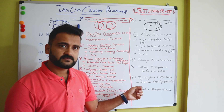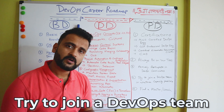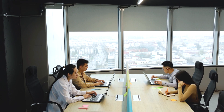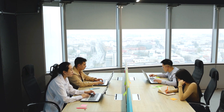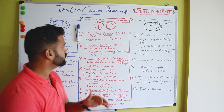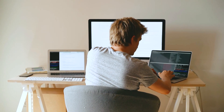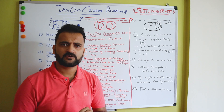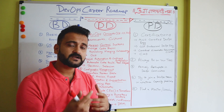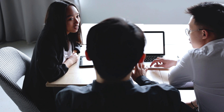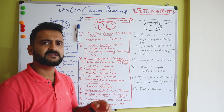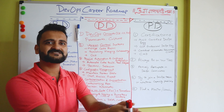Fourth, try to join a DevOps team in whatever capacity possible. Don't wait for a perfect DevOps role — even if you're still in the Before DevOps stage, try to get into a DevOps team, maybe as a tester or scrum master. If you're non-technical, try to understand how a DevOps team works. Once you become part of that team and culture, you will automatically learn a lot of tools — you just need to do things hands-on.